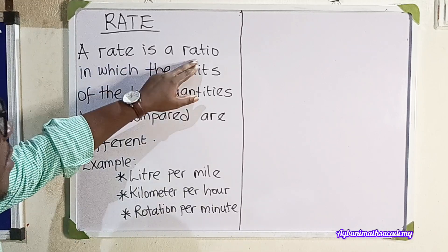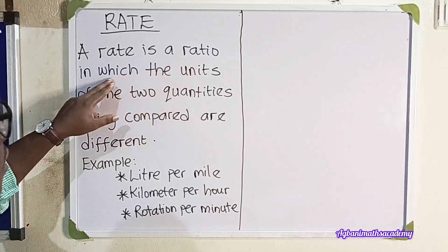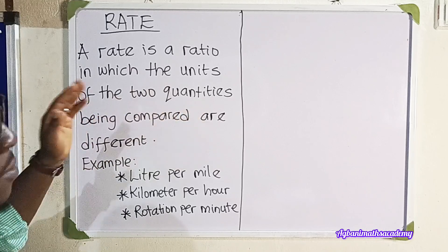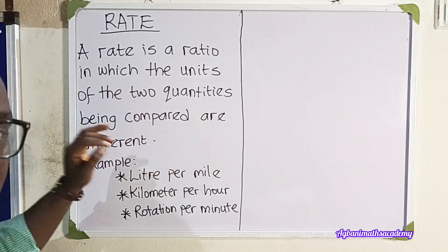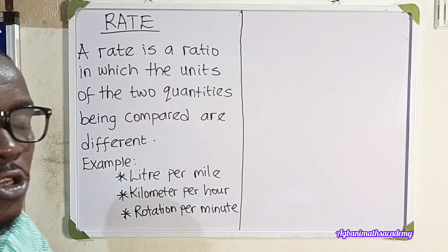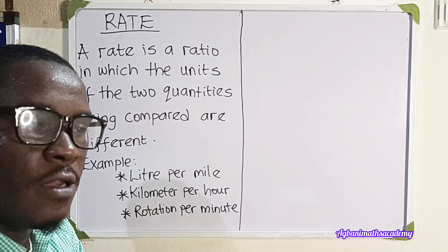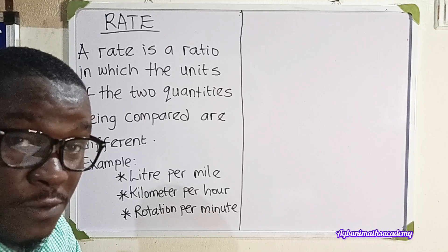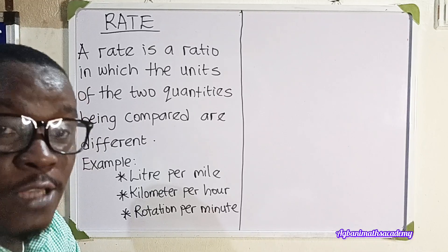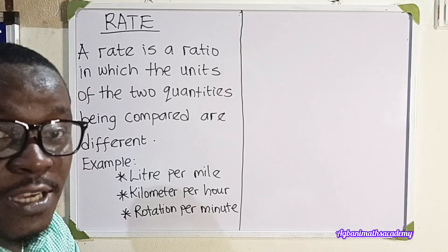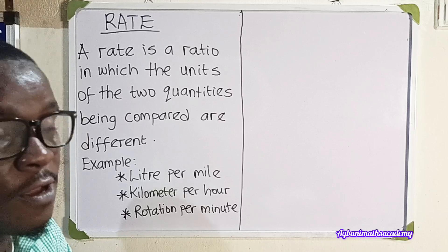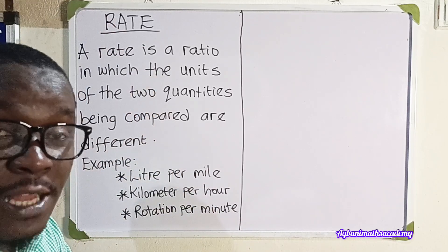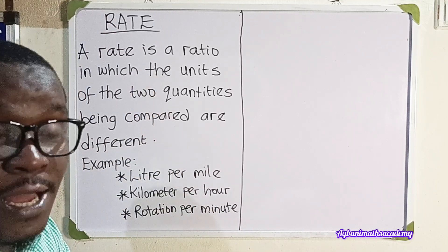A rate is a ratio in which the units of the two quantities being compared are different. So, rates are ratios, but the only difference between rates and ratio, as we have learned in the previous lesson, is that for rates, the units of the quantities being compared are different.